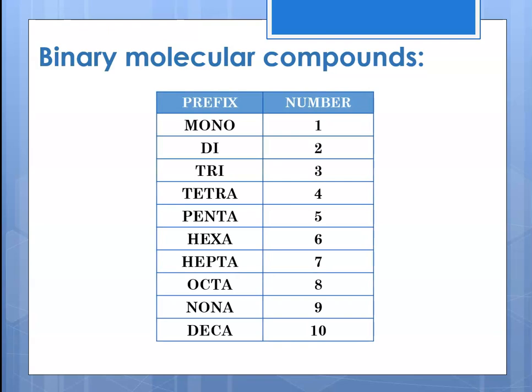The prefixes we use for binary molecular compounds are shown in this table. We hold you responsible for the prefixes from 1 through 10: mono, di, tri, tetra, penta, hexa, hepta, octa, nona, and deca. These are different prefixes than we use when naming the number of carbons in a chain of hydrocarbons. For organic compounds, you'll recall for 1 through 10 we used meth, eth, prop, but, etc. For binary molecular compounds, we use this set of prefixes — two different sets.